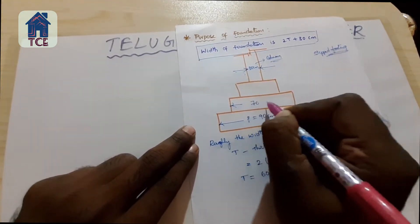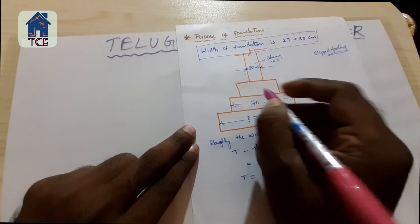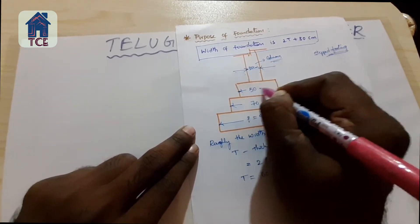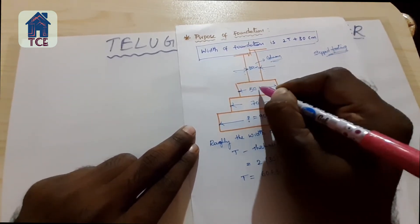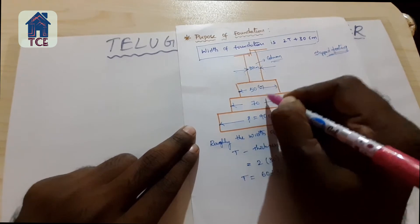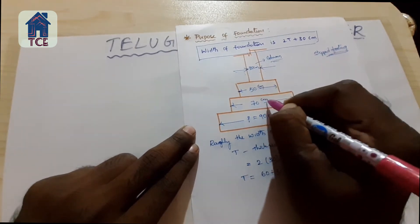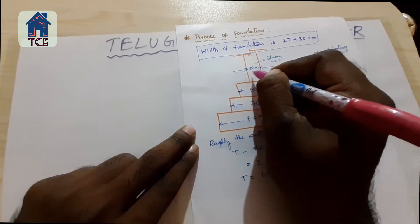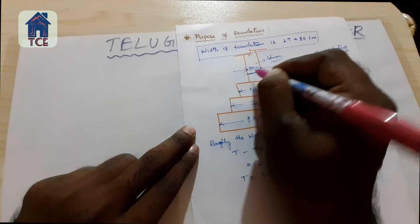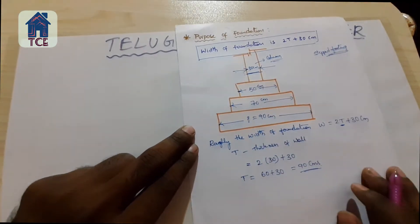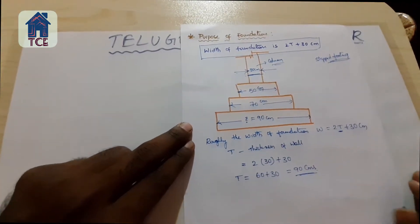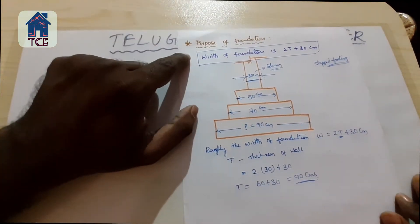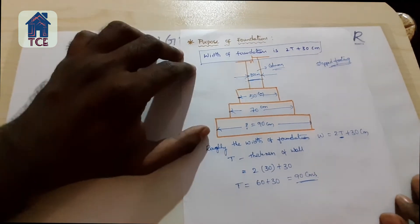Since the column is one, this is 70 cm and 50 cm. This is 30 cm. This is the purpose of foundation.